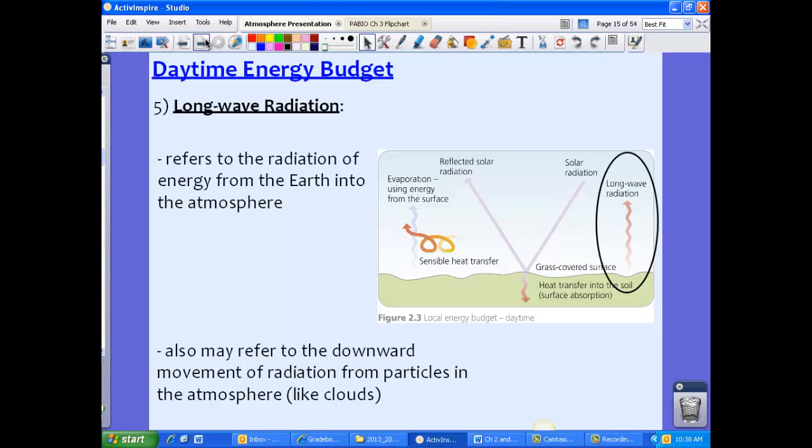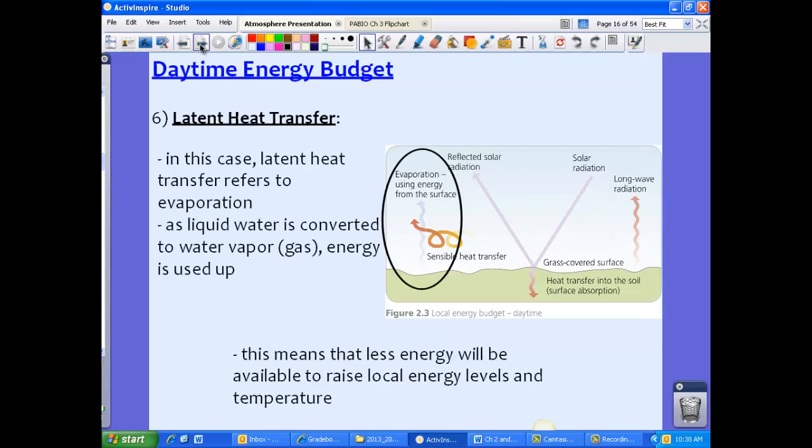Our fifth component is long-wave radiation. Now this refers to the radiation of energy from the Earth into the atmosphere. So this is the stuff that comes from the surface of the Earth, like I mentioned earlier in the last video. So long-wave radiation is the stuff that was already radiated by the Sun. It was absorbed by the Earth, and now it's being re-radiated up as long-wave radiation. And this happens a lot as well from clouds. It can be re-radiated downward from the clouds itself. So long-wave radiation will also have some sort of effect on the daytime energy budget.